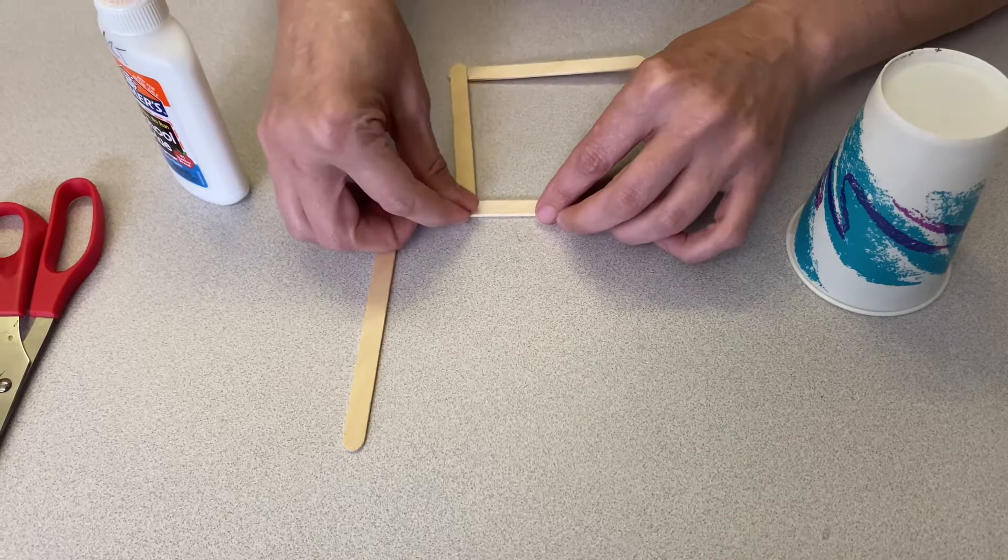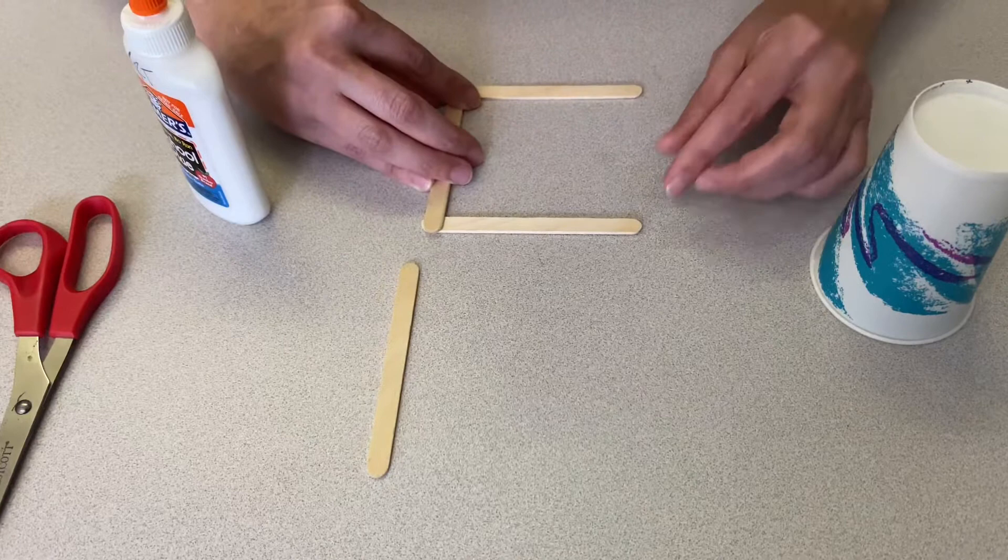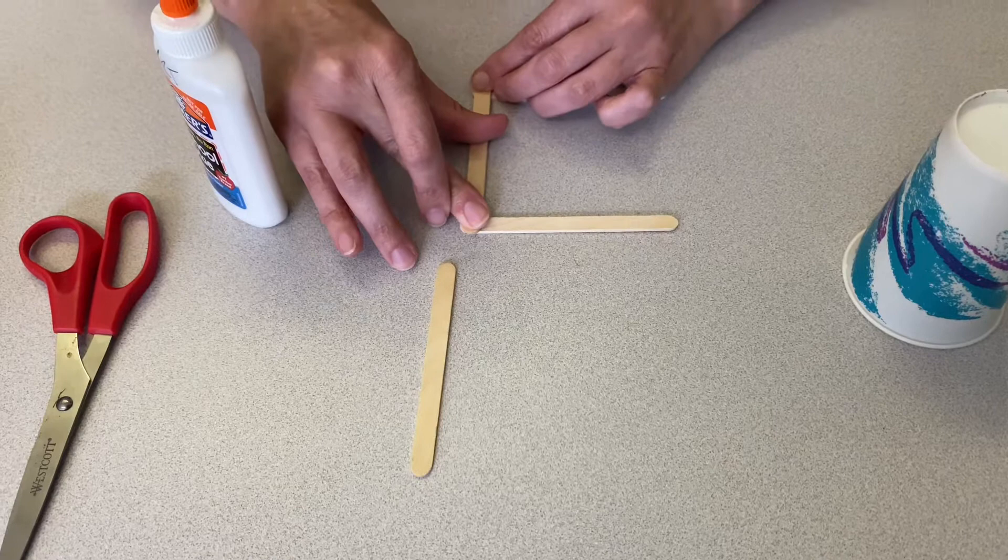Once we have that U shape, we're going to take the fourth popsicle stick and we're going to center it in the middle of that base.